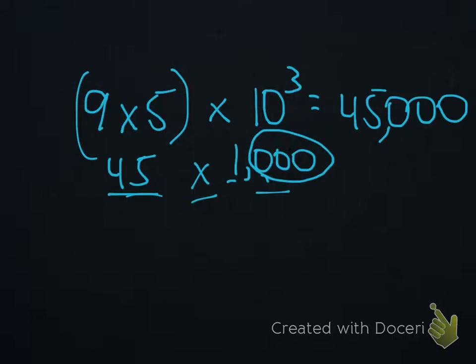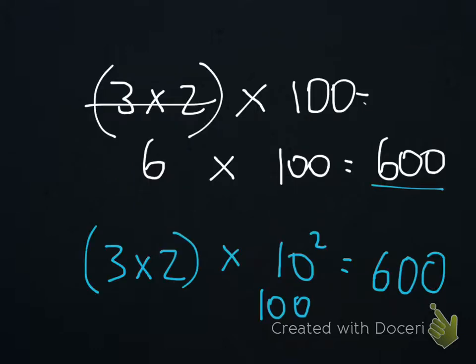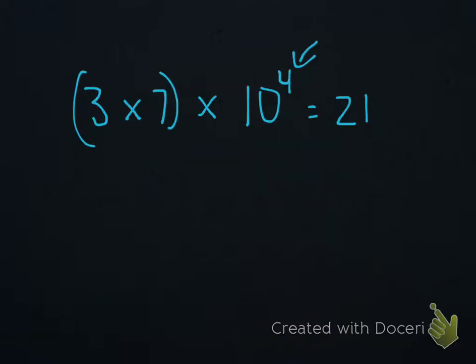If you take a look at this previous example, we knew our basic fact was 45, and here, the 3 as the exponent told us how many zeros we were adding to our answer, which gave us that answer of 45,000. The one before that, when we had our basic fact of 3 times 2 equaling 6, the 2 of the exponent told us that there were going to be two zeros in the product. And the same holds true for this example here, because we have our basic fact of 3 times 7 equaling 21, and this exponent tells us how many zeros that we will be adding to our product, which would give us an answer of 210,000.